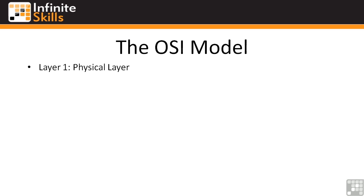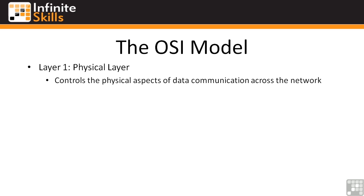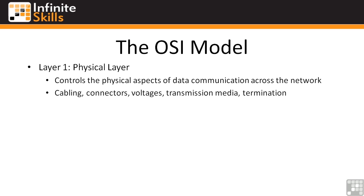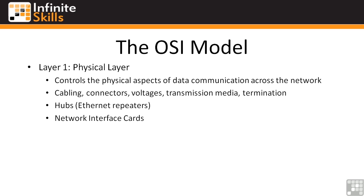Layer one is the physical layer. It controls the physical aspects of data communication — things like cabling, connectors, voltages, the type of media whether you're using copper or fiber, and the type of termination. The devices you'll see at the physical layer are hubs, which are basically Ethernet repeaters — they see electricity come in on one port and send it out all the other ports. Network interface cards also operate at this layer. Transmission is either light if using fiber, or electrical impulses on copper wire.